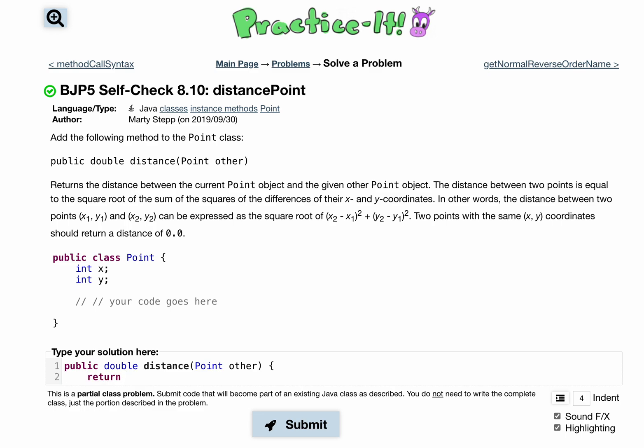We can do this all in one line actually. So let's return a Math.sqrt and then we'll have a square root because we want to square what's inside of here.